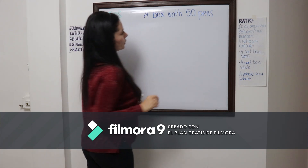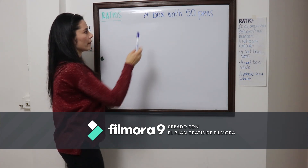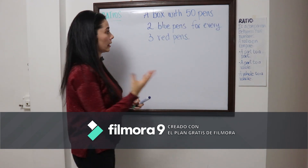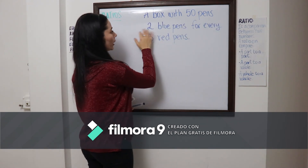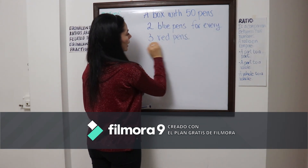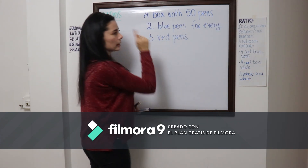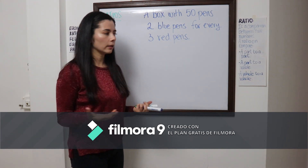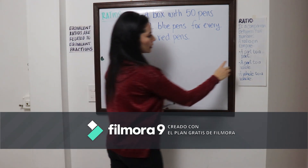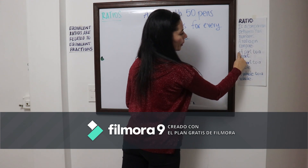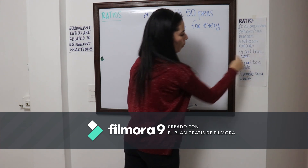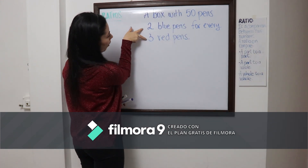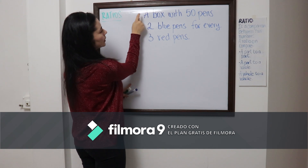Let's begin with the first example. We have a box with 50 pants. We're comparing blue pants against red pants in the box of pants we already had. So that tells us that a ratio can compare a part to a part.